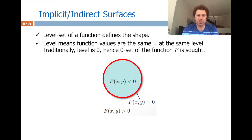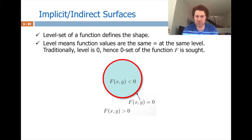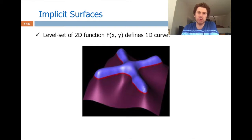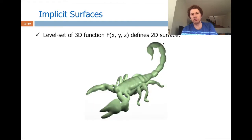The level set of a function defines the shape — 'level' means function values are the same at the same level. Traditionally this level is zero, giving the situation of negative inside and positive outside. A 2D function accepts two variables as input and outputs a scalar, from which I can extract a 1D curve. Similarly, a 3D function takes 3D inputs and I can extract polygons using marching cubes.